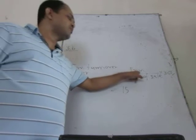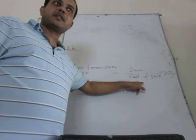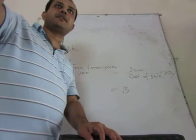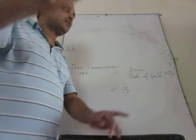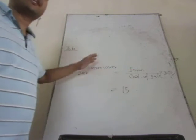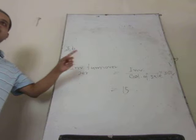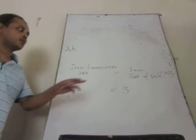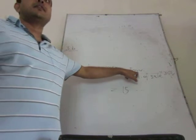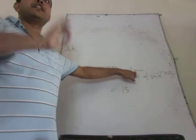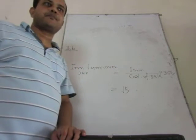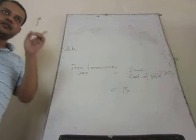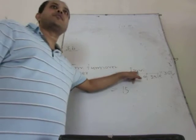Inventory to cost of sale. We have now discussed receivable, payable, and inventory. In every case, if it is possible to find out the average — meaning opening and closing figures are there — always try to find out receivable, payable, and inventory on an average basis. But if you are provided only one year, then use the single figure.